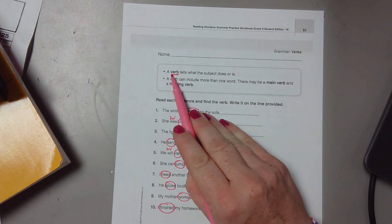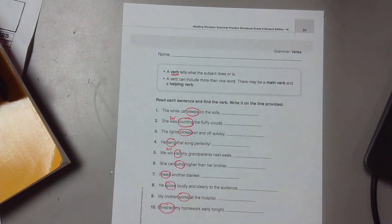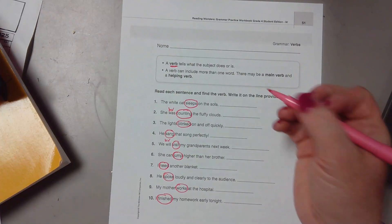Remind me, what part of speech were we looking for again? We were looking for the verb. So we found the word that tells what the subject does or is. After you get all of those circled, you're going to go back through and just write them on the line.